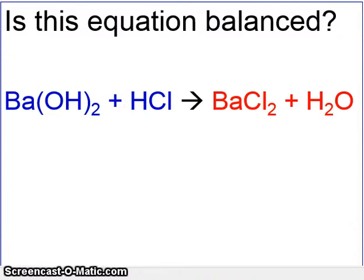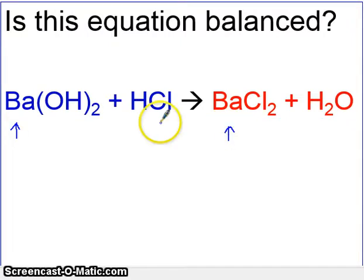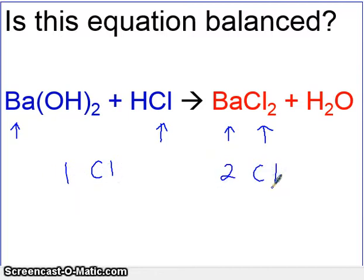Let's try an example. The question is: is this equation balanced? If we take a look on the left side, we have one barium, and we have one barium on the right side. But on the left side we have one chlorine, while here we have two chlorines. This equation is not balanced — we have one Cl on the left and two Cl on the right side.